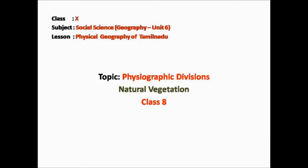In today's class we will see about the natural vegetation. In the previous class we saw about the soil and its types and also what type of crops are cultivated in each type of soil. These cultivated crops and fruits form a part of vegetation, but it is not natural vegetation. The cultivation of crops takes place with the help of human support, but natural vegetation occurs naturally.